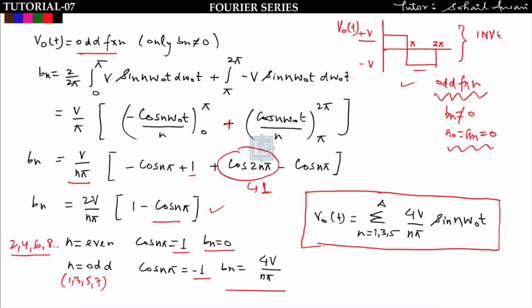This waveform is nothing but the output voltage of an inverter. That is why we are finding its Fourier series — so that when we study inverters, we can directly write: v_naught(t) = summation over n = 1, 3, 5 to infinity of [4V/(nπ)] sin(n·ω₀·t).